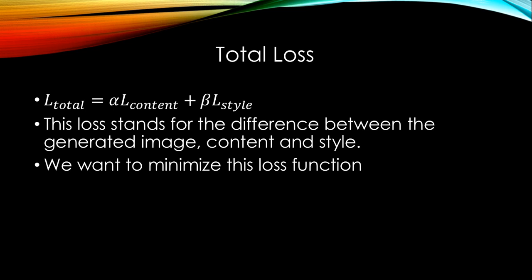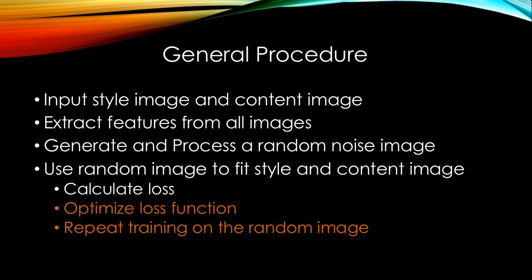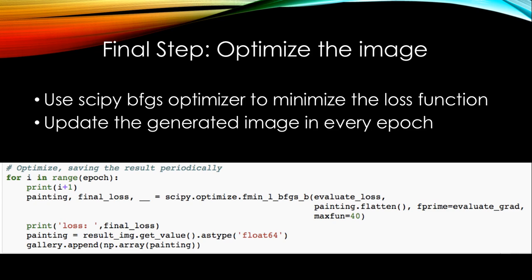Finally, we come to the total loss. We add unique constant weights to express our emphasis on either content loss or style loss. A huge style weight will keep very little content in the generated image, and the original photo will be distorted to fit the style texture. A huge content weight will only change some color in the photo, and the texture of style cannot be seen in the generated image. The last step is to minimize the loss function. We use the SciPy optimizer to do it for us, updating the random image with the gradient we get in every calculation of the loss function, and eventually we get the final result.